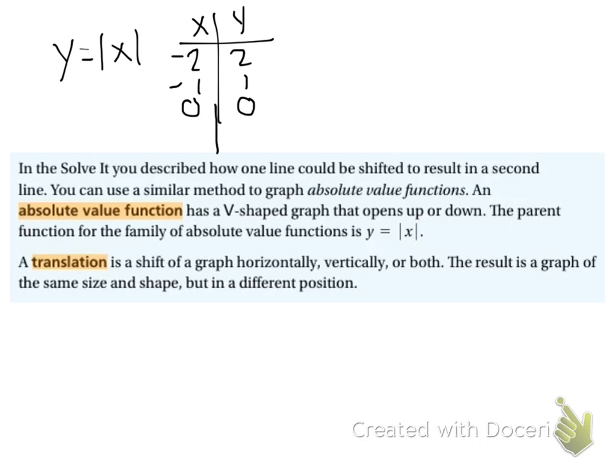0 is still just 0. Positive 1 stays a positive 1. Remember that absolute value functions only change a negative to a positive. It doesn't change a positive to a negative. So if we plug in 2, we also get 2.